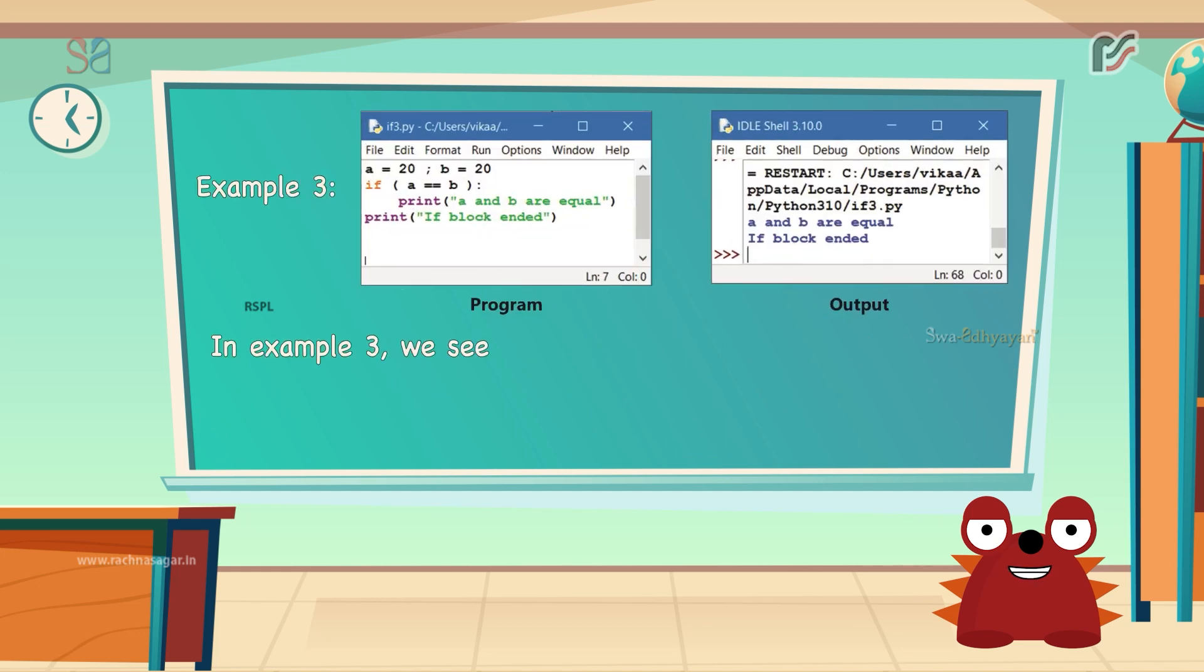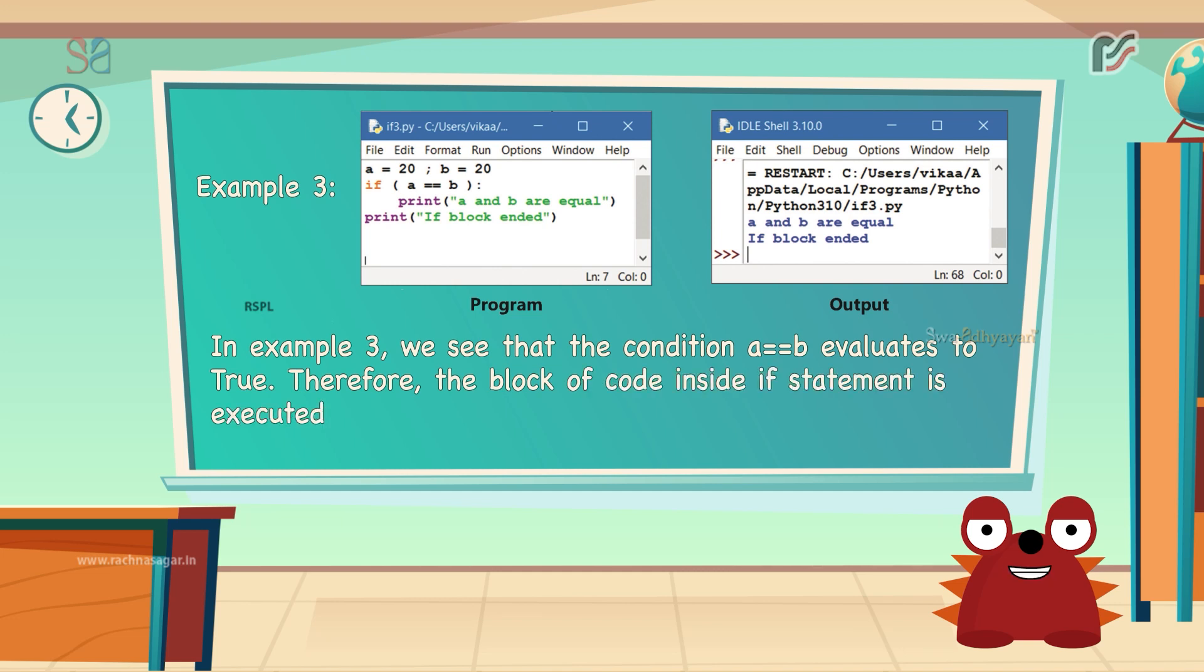In this third example, we see that the condition a is equal to b evaluates to true. Therefore, the block of code inside the if statement is executed.